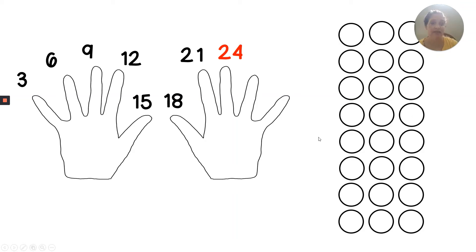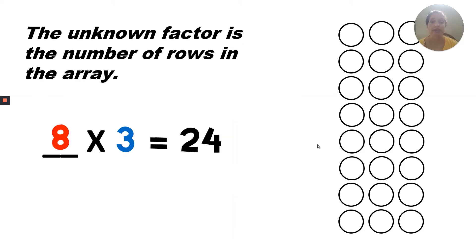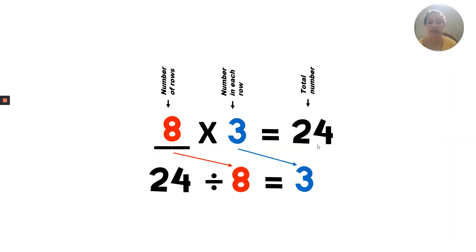This is how you would represent eight times three equals 24. The unknown factor is the number of rows in the array — the number of rows is eight. So there are eight rows of three, or eight groups of three equals 24. Relating this to a division equation: the eight is the number of rows, so that would be the first factor in the multiplication equation and it would be the divisor in the division equation. The three is how many in each group, and we know that would be the quotient. The total number is the product in the multiplication equation, and the total number always goes first in the division equation — this is the dividend.